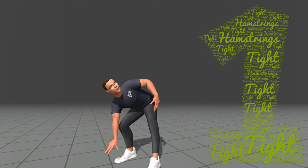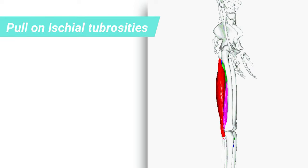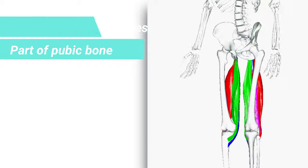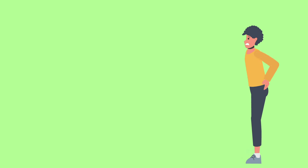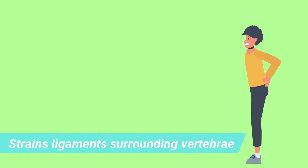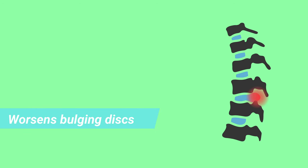Let's now go to the causes of back pain. The first one is tight hamstrings. Tight hamstring muscles are a common contributor to lower back pain. Tight hamstrings pull on the ischial tuberosities, one of the areas of your pubic bone. This tends to tilt your pelvis backwards. When the pelvis tilts back, the vertebrae in your lower back flex forward, and this can strain the ligaments that surround your vertebrae and also make bulging discs in your back worse.